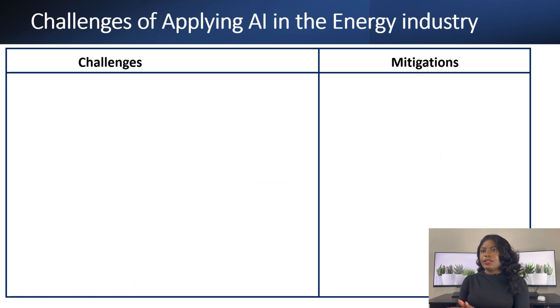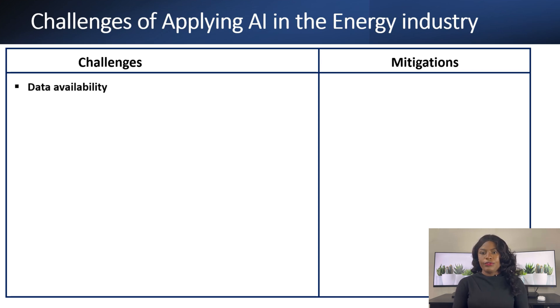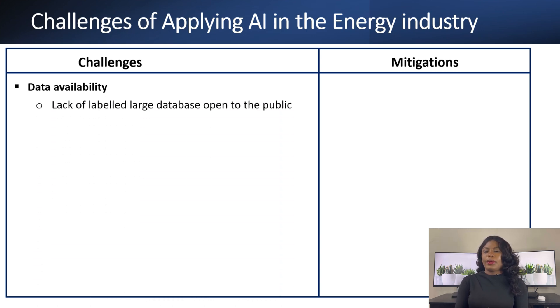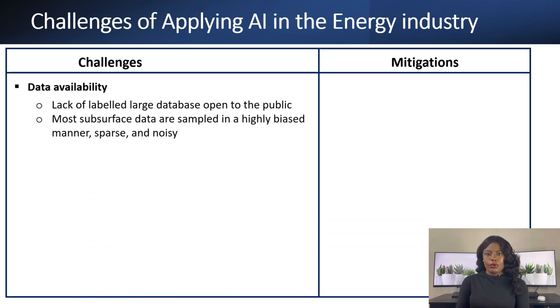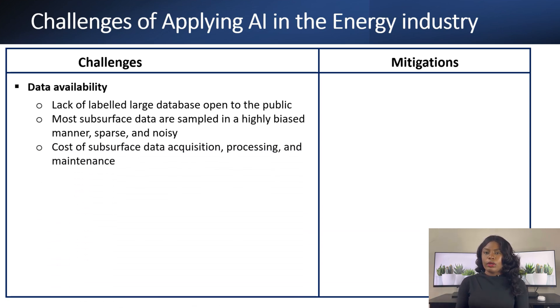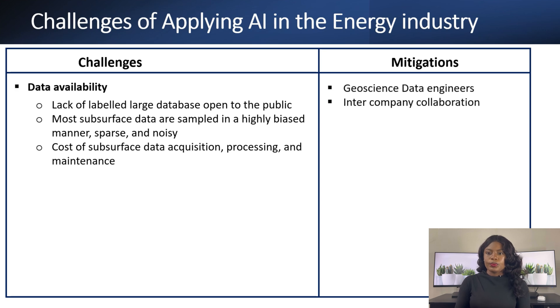I'll end by talking about the challenges of applying machine learning to the energy industry, as well as mitigation strategies. First, we have data availability — this is one of the biggest problems we currently face. We don't have enough labeled datasets to carry out machine learning applications. We need labeled data to train our machine learning models, and there isn't enough data available to the public.